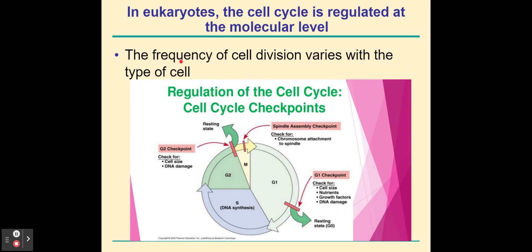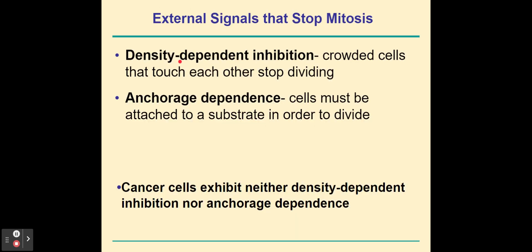Cell cycle regulation involves checkpoints. Cells replicate at different rates depending on their type — cheek epithelial cells have a high turnover rate, while neurons in the brain may not replicate as quickly. External signals can stop mitosis. Generally, when cells touch each other they will stop dividing — this is called density-dependent inhibition. Cells also stop dividing if they are not anchored to a substrate — this is called anchorage dependence. The only exception is cancer cells, which do not follow density-dependent inhibition or anchorage dependence.